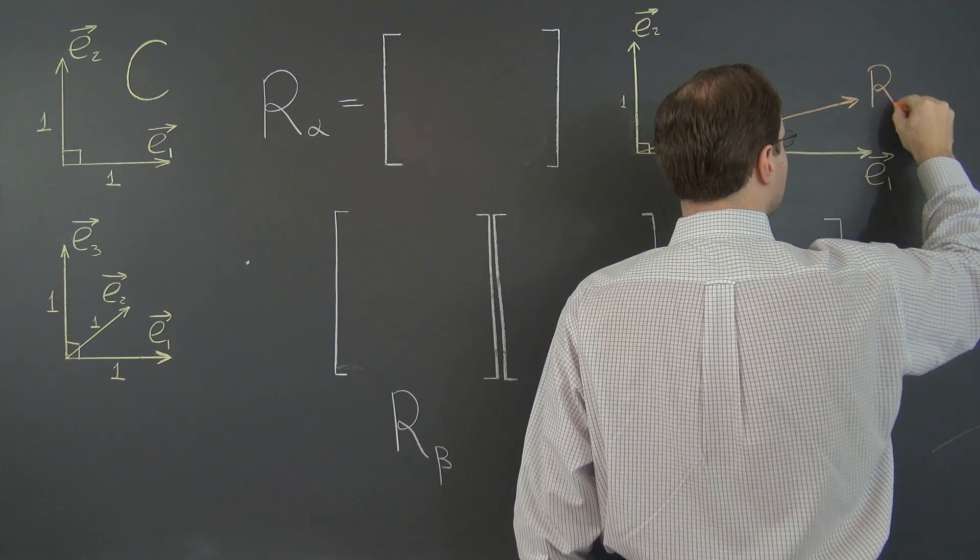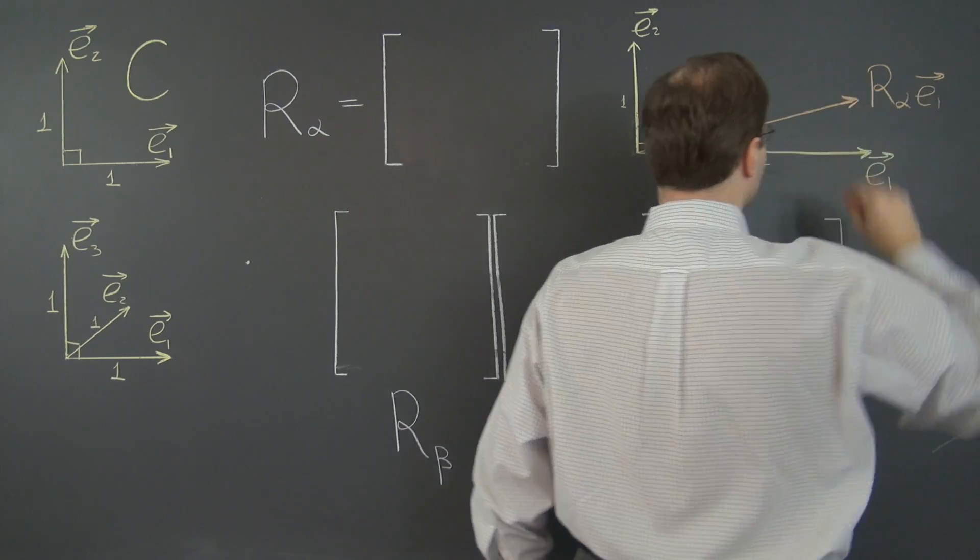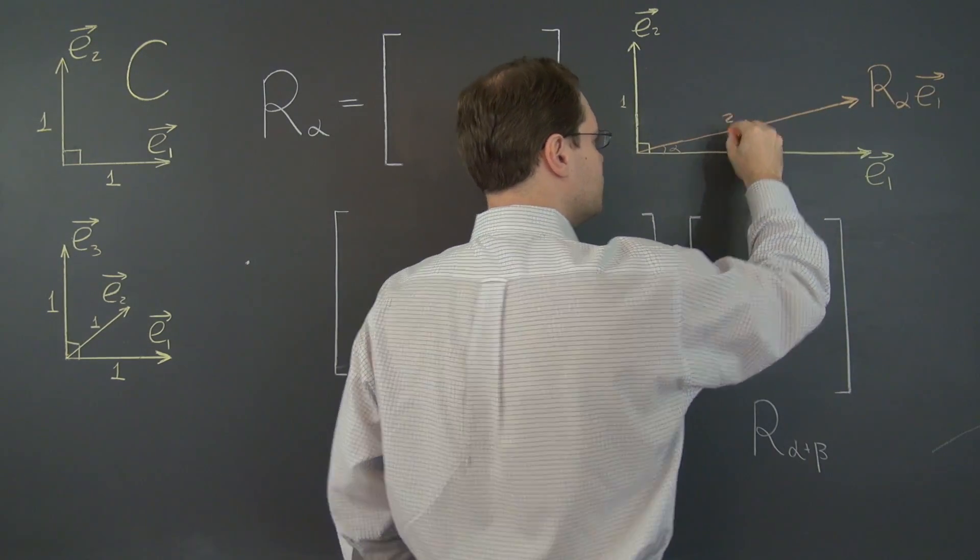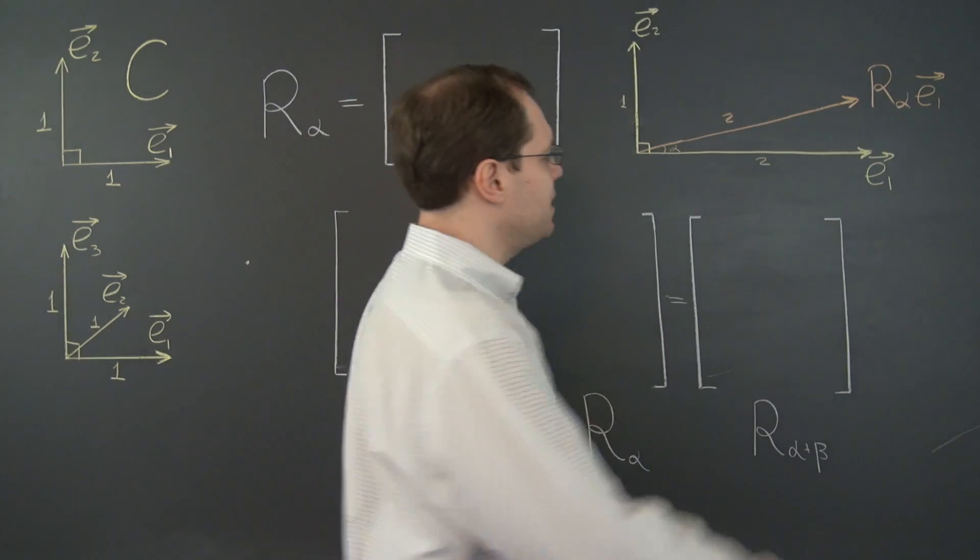So E1 becomes this vector right here. This is R sub alpha of E1. Okay. It's still length 2.